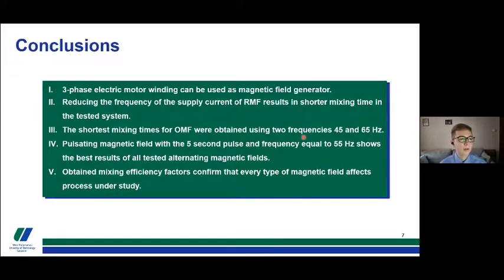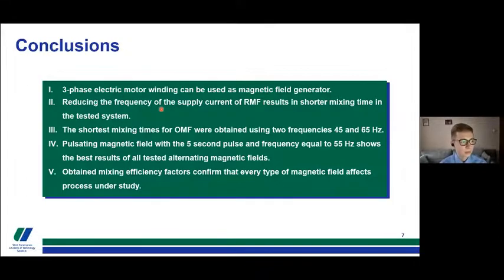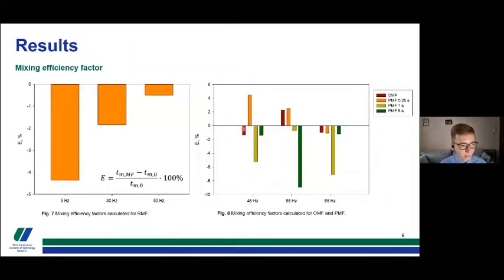Now for the conclusions. The three-phase electric motor winding can be used as a magnetic field generator. Reducing the frequency of the supplying current of the rotating magnetic field results in shorter mixing time. However, the shortest mixing times for the oscillating magnetic field were obtained using the two boundary frequencies, 45 and 65 Hz.